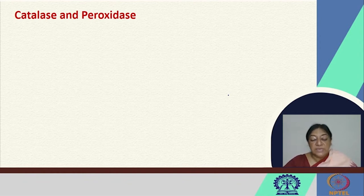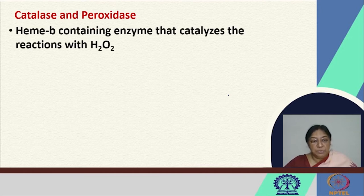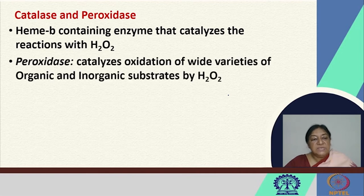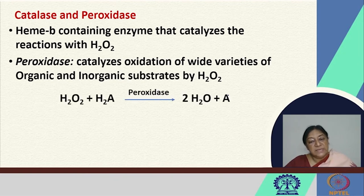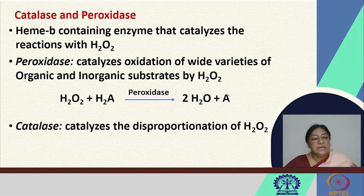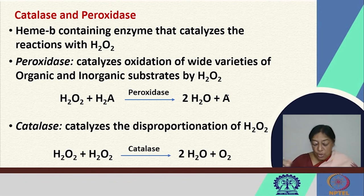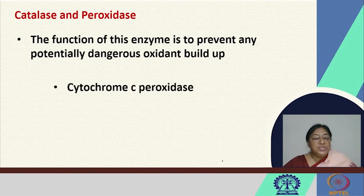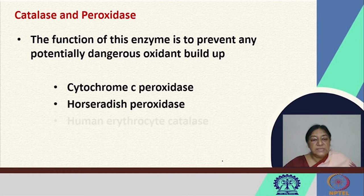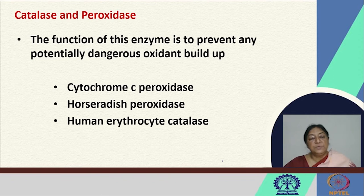For catalase and peroxidase, these are specific heme-binding proteins. The heme B-containing enzyme catalyzes reactions with hydrogen peroxide. Peroxidase catalyzes the oxidation of a large variety of organic and inorganic substrates by H2O2. Catalase, on the other hand, catalyzes the disproportionation of H2O2 into H2O and O2 through an oxidation and reduction process. The function of catalase and peroxidase enzymes is to prevent any potentially dangerous oxidant buildup. Examples include cytochrome C peroxidase, horseradish peroxidase, and human erythrocyte catalase.